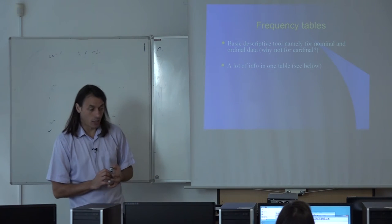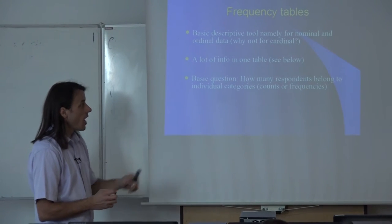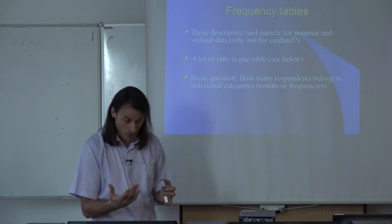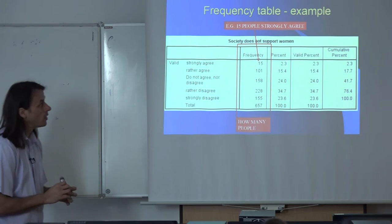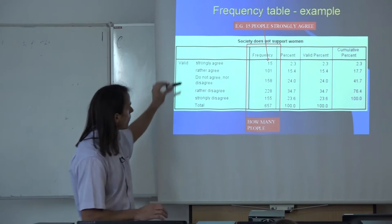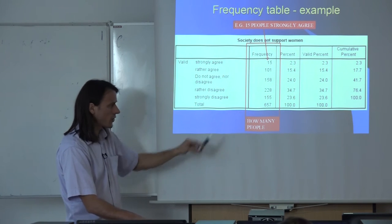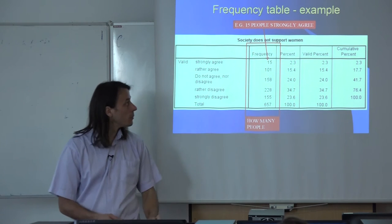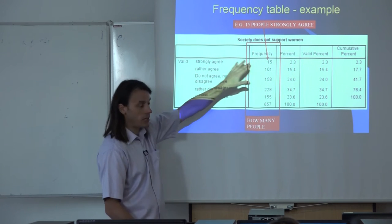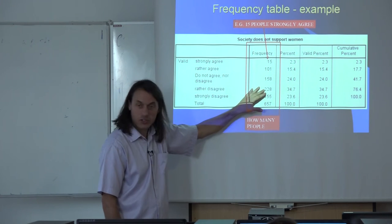There is quite a lot of information in a frequency table. The basic question it answers is: how many respondents belong to individual categories — counts or frequencies. Here is a simple example about the statement 'society doesn't support women,' with possible answers from strongly agree to strongly disagree. The first column is called frequency and gives the number of respondents per category. For example, 15 people strongly agreed.